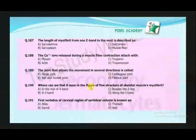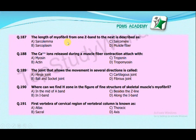The length of a myofibril from one Z band to the next is described as: sarcolemma, sarcoplasm, sarcomere, or muscle fiber? The correct answer is sarcomere. The sarcomere is the space that is present between two Z bands.